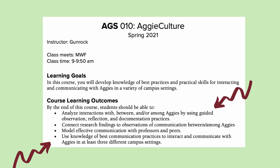What we have here is a syllabus of AGS 10, or Aggie Culture, a fictional class being offered this spring. The instructor is Gunrock, and this is a representation of what a good syllabus looks like. Here you can see that your learning goals and course learning outcomes are outlined. The verbs mentioned earlier in this video are also outlined here, such as analyze, connect, and model.